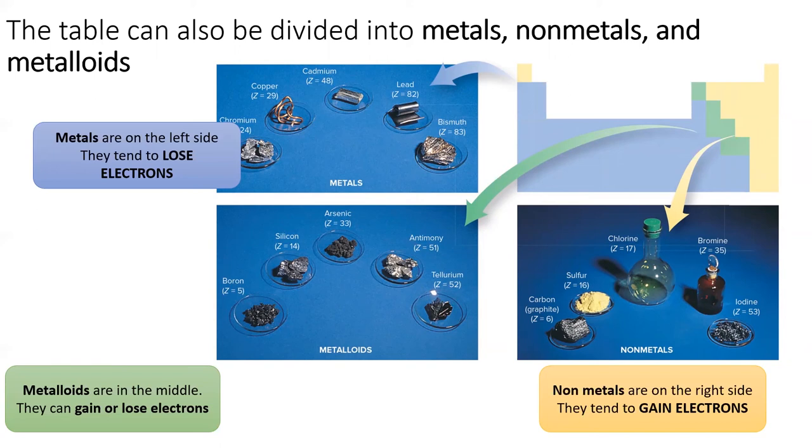Metalloids are sandwiched between the metals and nonmetals. Metalloids will both gain or lose electrons depending on who they're paired with. Their properties are in between those of metals and nonmetals.